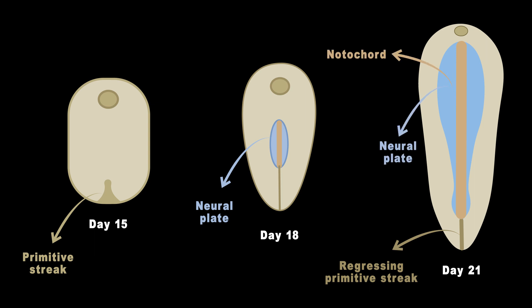At the same time, the ectoderm layer starts forming something called the neural plate. This neural plate is crucial because it eventually becomes the brain and spinal cord, which make up the central nervous system. The formation of the neural plate involves a series of complex processes at the molecular and cellular level.